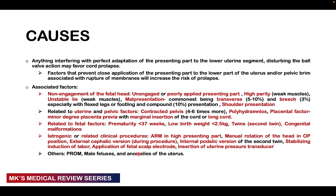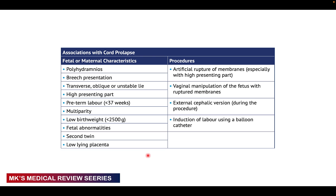Iatrogenic-related clinical procedures include artificial rupture of membranes when there is a high presenting part not well applied to the lower segment, malrotation of the head in occipito-posterior position, external cephalic version, internal podalic version of the second twin, stabilizing induction of labor, application of fetal scalp electrodes, and insertion of uterine pressure transducers. Other associated factors include premature rupture of membranes, male fetuses, and uterine anomalies. Here is a table grouping these into fetal, maternal, and procedural characteristics.